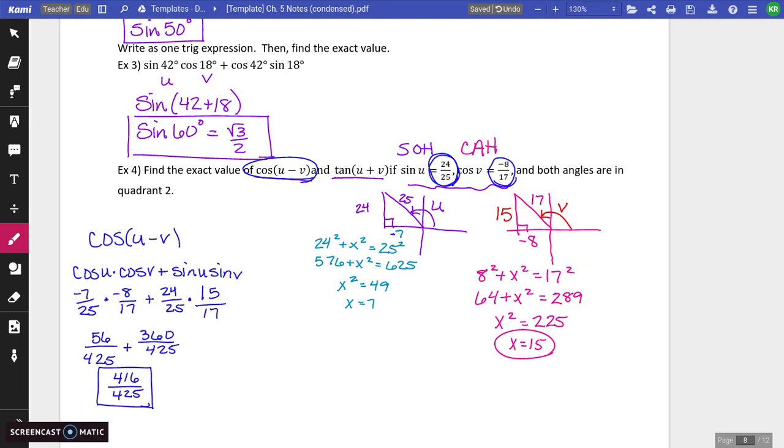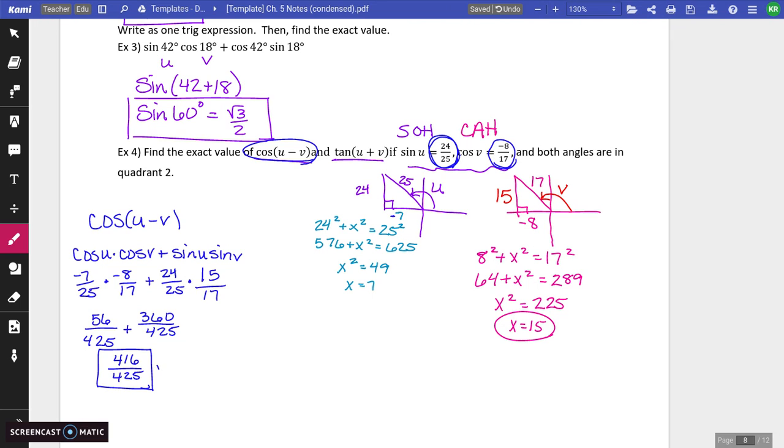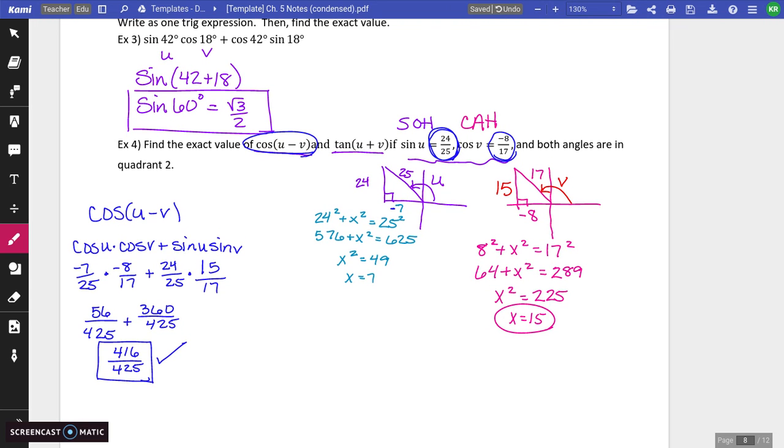So 56, and that's going to be 425 plus 360 over 425, and this is going to be 416 over 425. It won't reduce. So that is your value of cosine of U minus V. Okay, so that's our first thing taken care of.